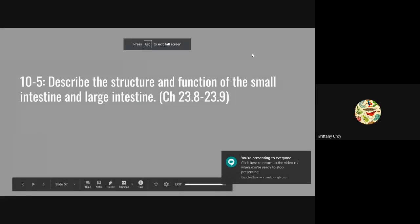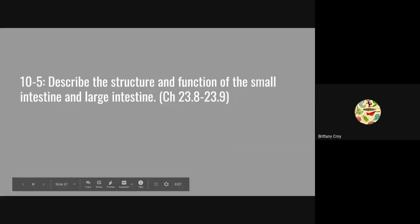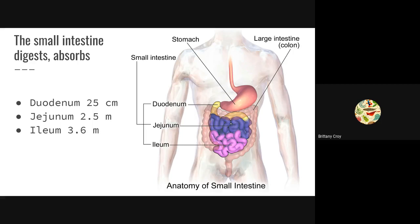Today we're going to talk about objective 10-5: describe the structure and function of the small intestine and large intestine. Starting with the small intestine, the main functions are to digest and absorb, and the small intestine is split into three different subdivisions.